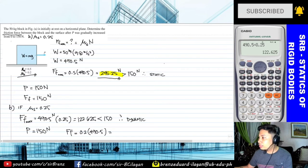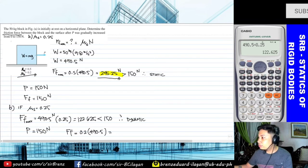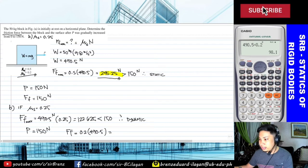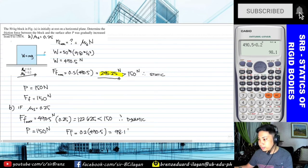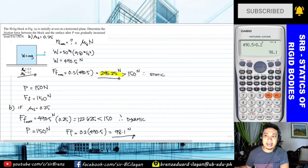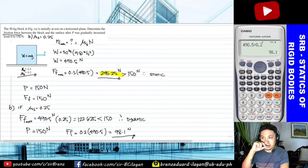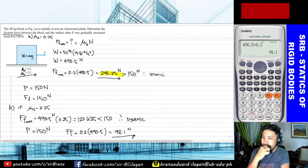So the kinetic frictional force equals 0.2 times 490.5 equals 98.1 N. That is our answer for letter B. I hope that is clear and you understand the difference between the two scenarios. Again, this problem is under Type 1.